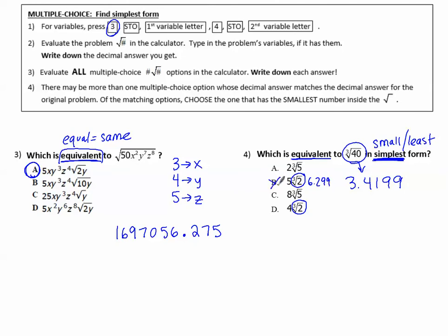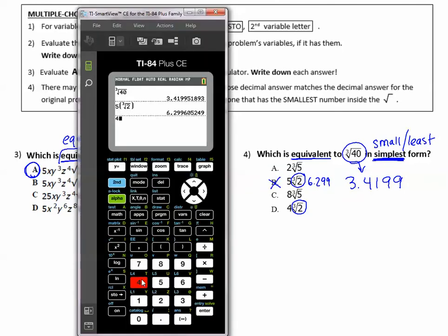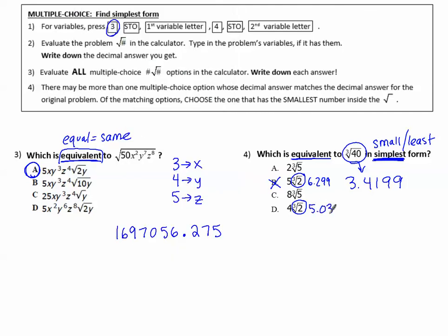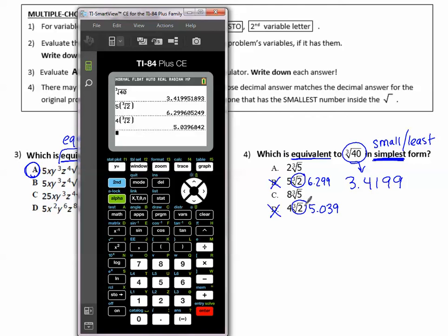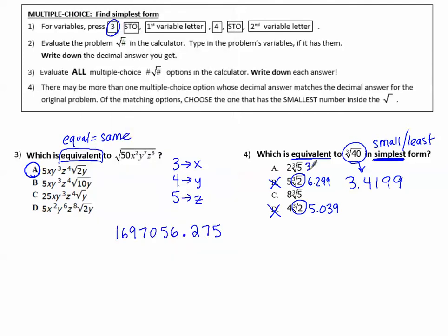And then 4 cubed root, math 4, 2, enter, 5.039. That is not the correct answer either. We've checked the ones that have the simplest radicals. Now I'm going to check this one because the number outside is small, 2, math 4 for cubed root, 5, enter, and that one matches 3.4199. That is equivalent, that is the same, choice A is the correct answer.